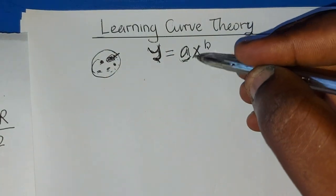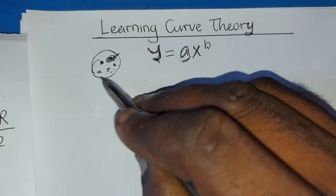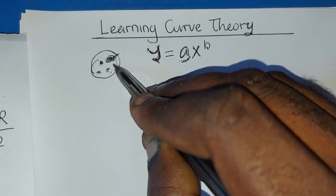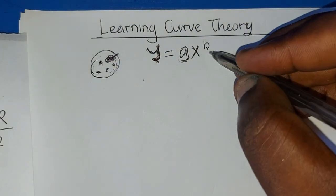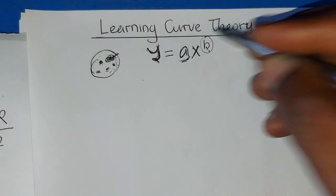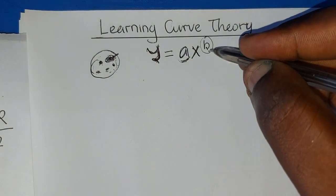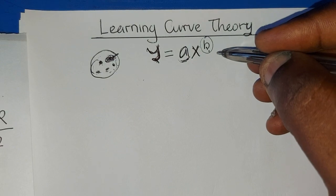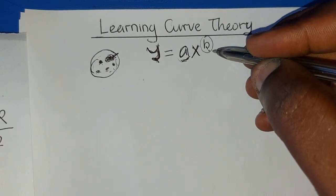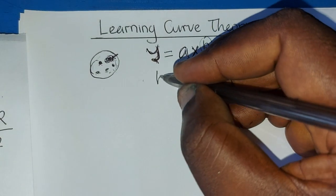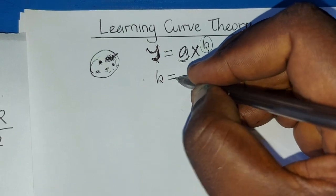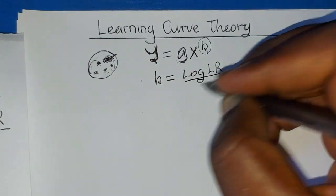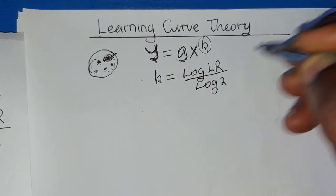X is the cumulative units, which is 1, 2, 3, 4, 5. Then B represents the index of the learning rates — the index of the learning experience. And B is given as log of learning rate all over log 2. Take note of this formula.